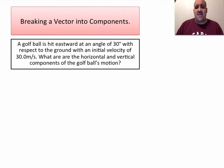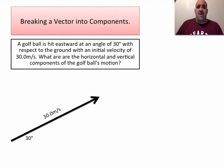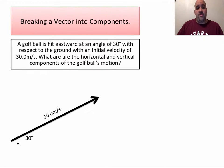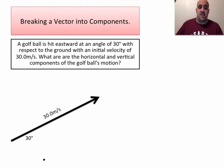So if we have a golf ball, and let's say you hit it eastward at an angle of 30 degrees with respect to the ground, and the golf ball has an initial velocity of 30 meters per second, what are the horizontal and vertical components of the golf ball's motion? We're going to represent that velocity as a vector with magnitude 30 meters per second, direction 30 degrees with respect to the ground eastward. This ball is going to travel a curved path and hit the ground.